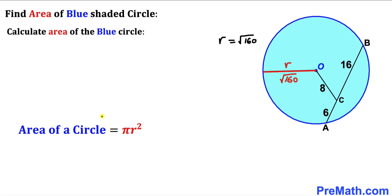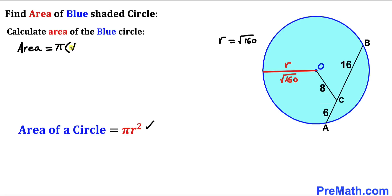Recalling the area of a circle formula: area = π × r², where r is the radius. In our case, radius is √160. So the area equals π times (√160)², and since the square and square root cancel each other, the area of this circle turns out to be 160π square units.